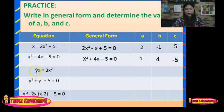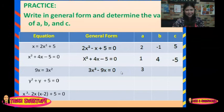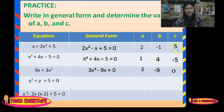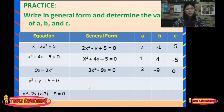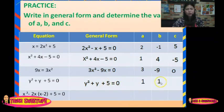How about the third equation? We have 9x equals 3x squared. In general form it becomes 3x squared minus 9x equals 0. A is 3, B is negative 9, and C is 0. The fourth equation: y squared plus y plus 5 equals 0 — it is already in general form. A is 1, B is 1, and C is 5.